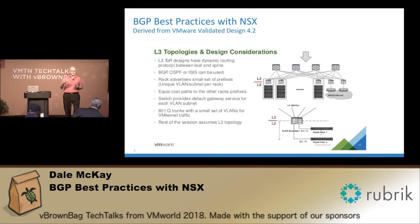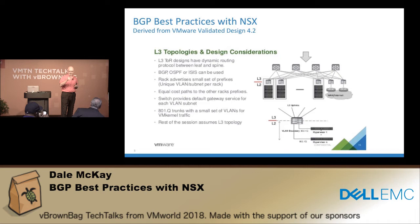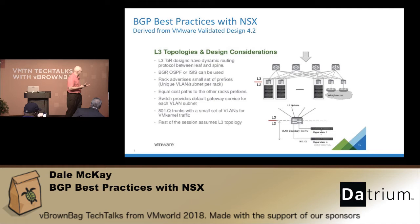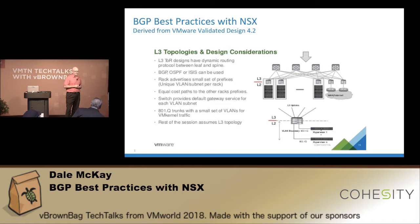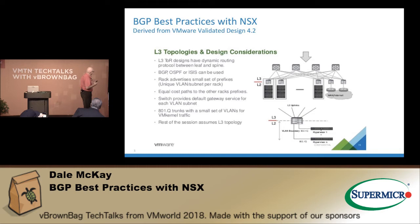One of the first things we need to talk about: a lot of people raised their hands when I asked about leaf and spine architecture. How many of you implemented a layer three leaf and spine architecture? What we mean by layer three leaf and spine is that the layer two domain terminates at the top of the rack switch. That's not the only way you can do leaf and spine, but for the purpose of this presentation, that's going to be our focus.